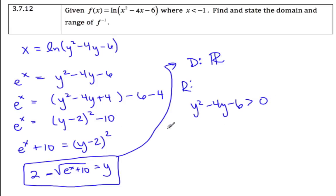So we've already completed the square, it's y minus 2 squared minus 10 is greater than 0.